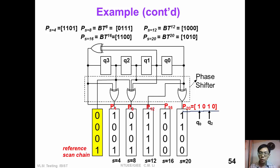For example, P is equal to 20, which means that we are taking the LFSR Q0 output and Q2 output. So that we can design a new phase shifter output, which is 20 cycles phase shifted with respect to the reference scan chain.